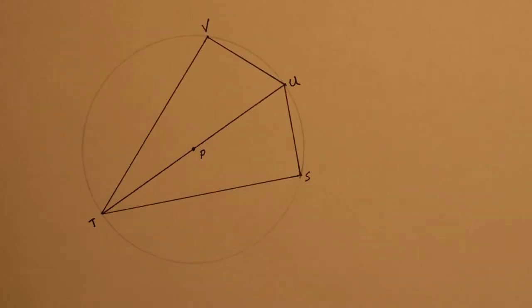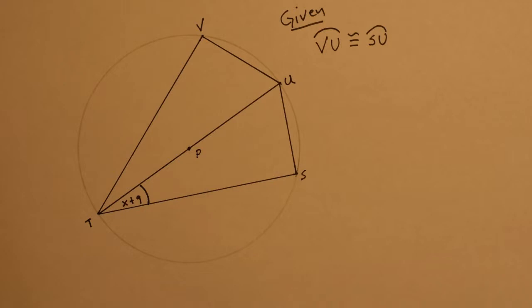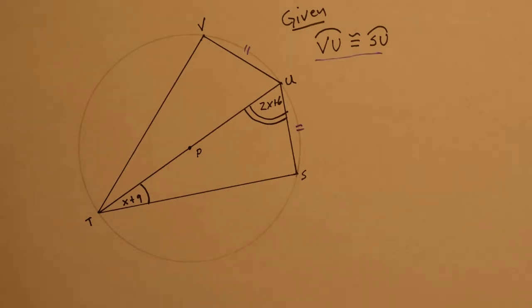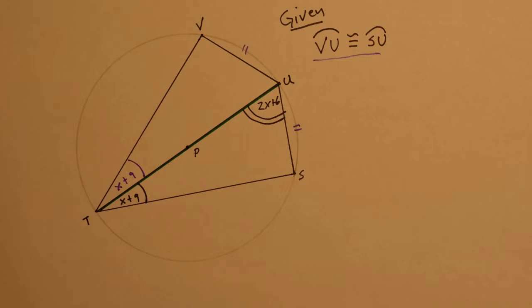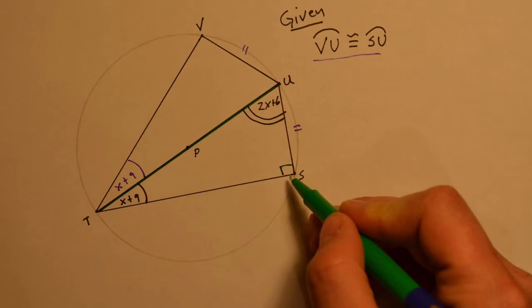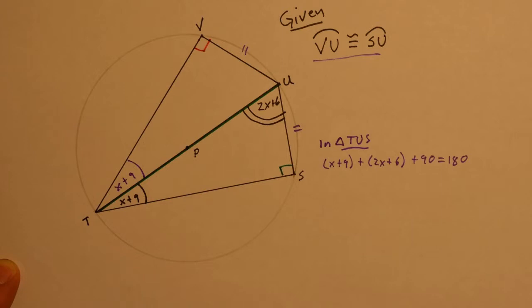Next example: circle P has a diameter TU, with points V and S, and arc VU is congruent to arc SU. Angle UTS is x plus 9, and angle SUT is 2x plus 16. Since the arcs are congruent, the inscribed angles STU and UTV that intercept them are also congruent. We have a semicircle up the middle, so angle S must be 90 degrees — it intercepts a semicircle — and similarly angle V is 90 degrees. Looking at triangle TUS, we know all three angles sum to 180, so we can solve for x.